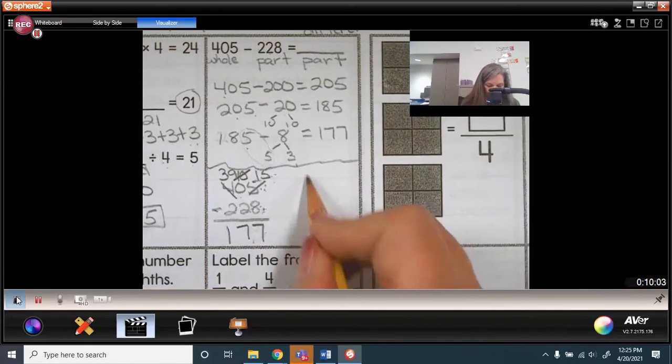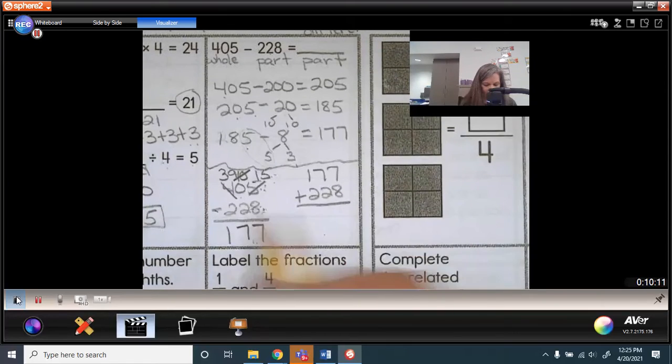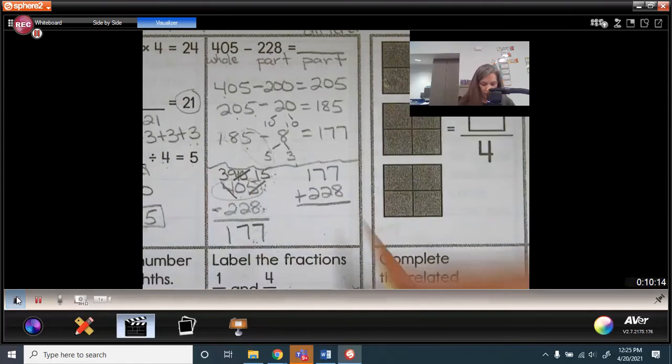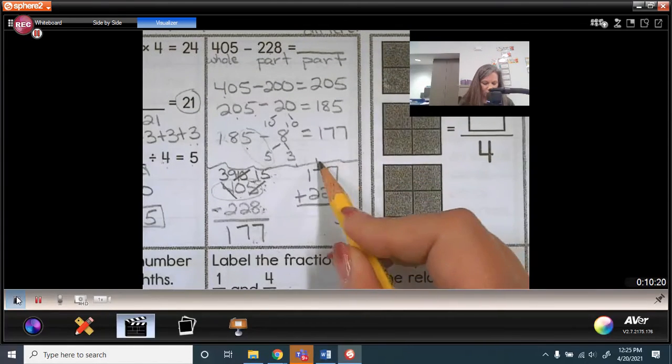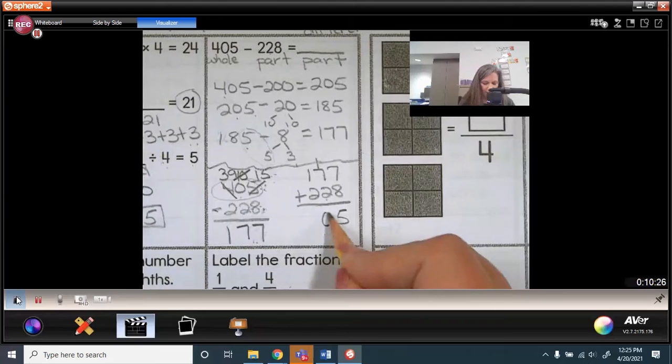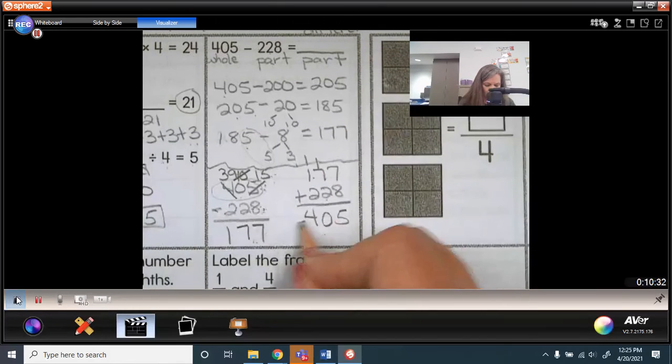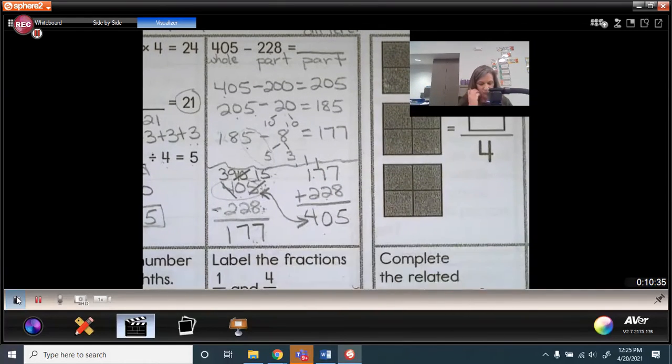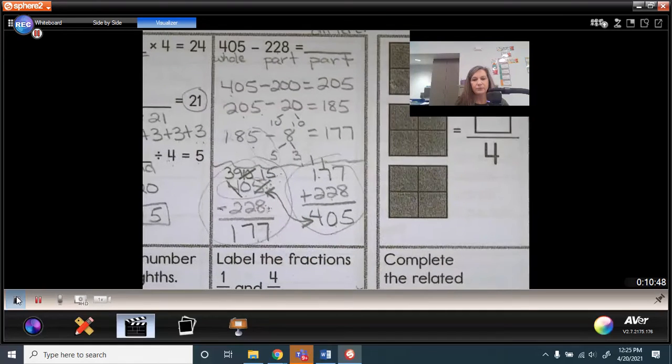Remember, you can always check your subtraction by taking the two parts and adding them back together to find the total. So 8 plus 7 is 15. Carry the 10. 70 plus 1 more 10 is 80. Plus 1 more 10 is 90. Plus 1 more 10 is 100. I'm carrying that 100. 200 plus 100 is 300. Plus 100 is 400. Do these match? Yes, they do. So we have done our subtraction correctly. Remember, all three numbers have to be in both equations when you're checking addition and subtraction.